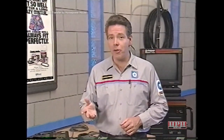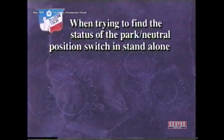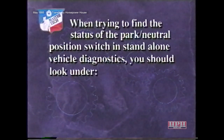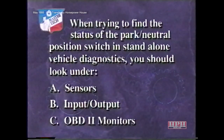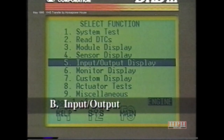Now that you know where to find information when performing vehicle diagnostics, let's take a look at some new features that will make the DRB3 easier to use. Try this review question: When trying to find the status of a park neutral position switch in stand-alone vehicle diagnostics, you should look under A, Sensors; B, Input-Output; or C, OBD2 Monitors. The answer is B. Since the status of the park neutral position switch is either park neutral or drive reverse, you would find it under Input-Output.